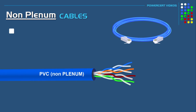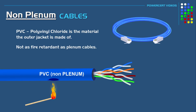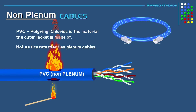PVC, or polyvinyl chloride, is the material that the outer jackets of a cable are made of, and these cables have different ratings. PVC cables rated as non-plenum should not be used in plenum areas. These cables are a lot cheaper than plenum cables, but they are not as fire retardant. In addition, if these cables are burned, they can release toxic gases such as hydrochloric acid and dioxin. These cables should not be used in plenum areas.